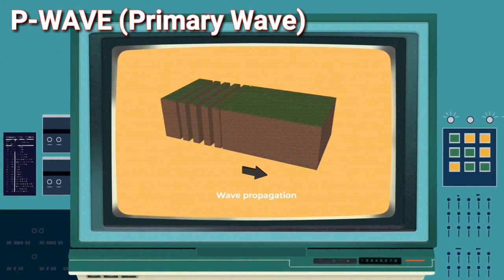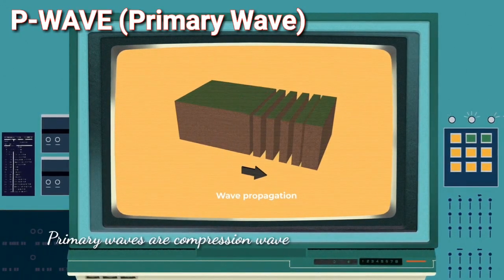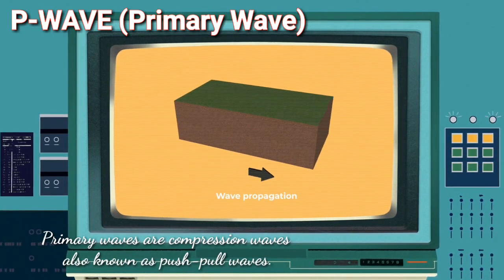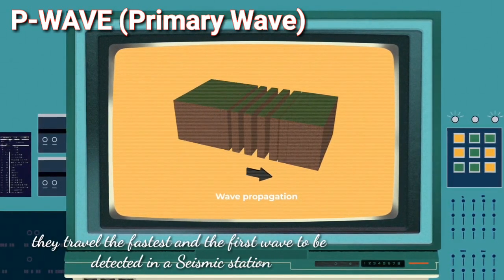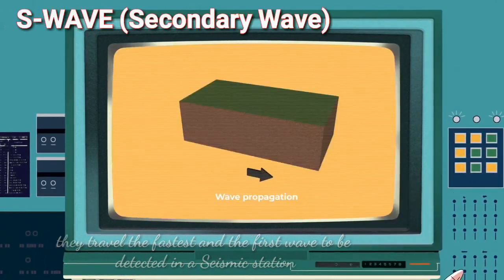P-wave or primary waves are compression waves, also known as push-pull waves. They travel the fastest and the first wave to be detected in a seismic station.